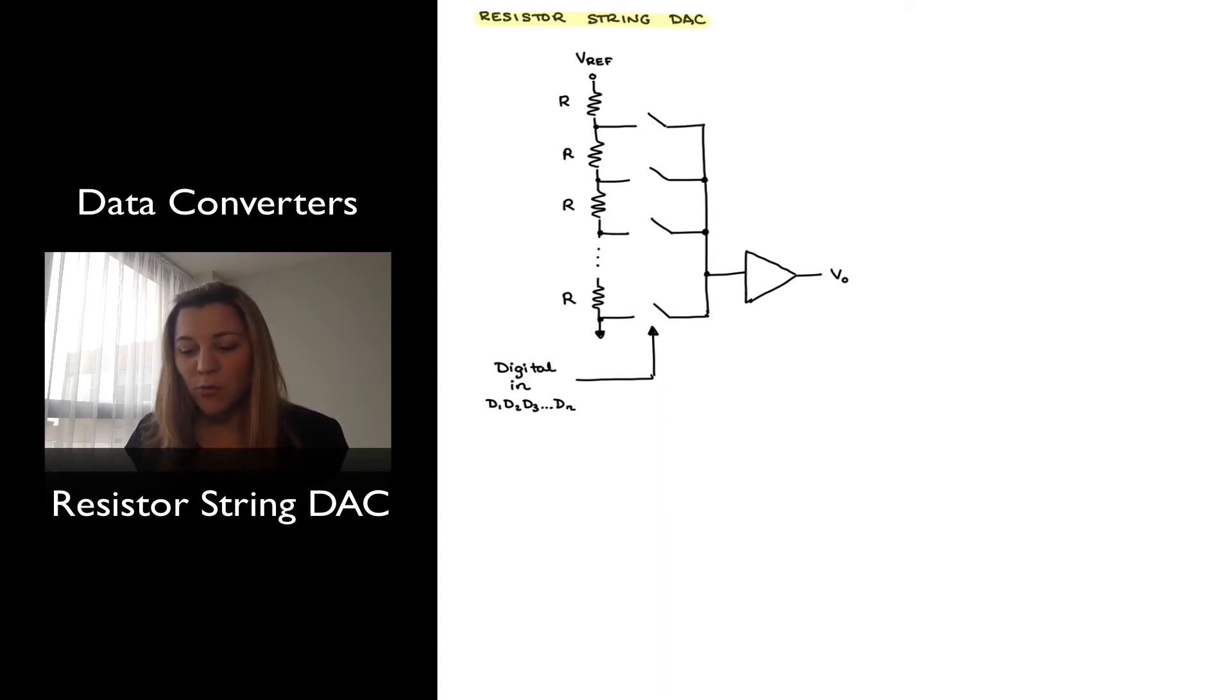So if we have, for example, let's imagine a 4-bit digital word, which will be basically B1, B2, B3, and B4, basically there will be 2 to the 4, or 16 possible states or possible values for my digital input.